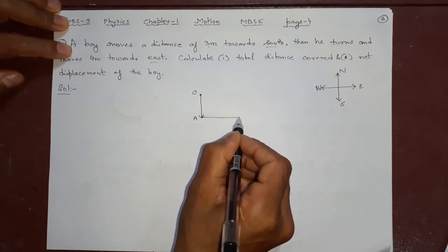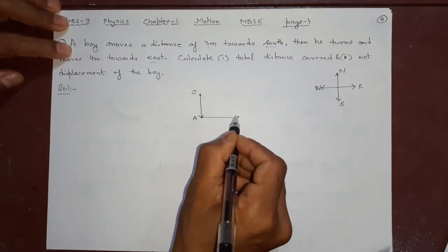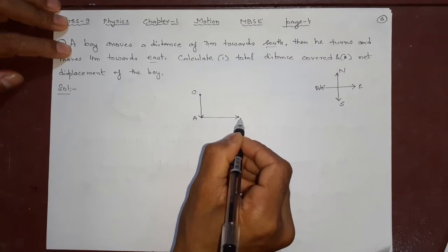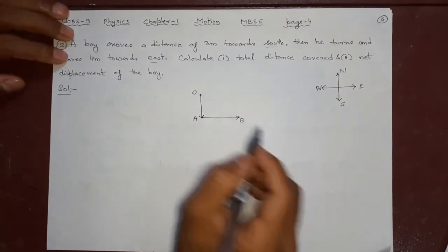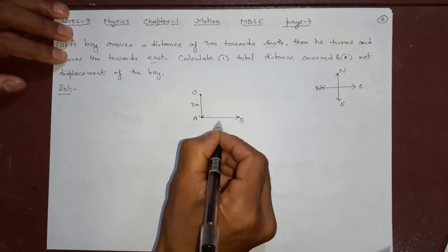4 means slightly longer than 3. Maybe here slightly longer. So he reaches here. That is the whole thing. This is 3 meter, this is 4 meter.